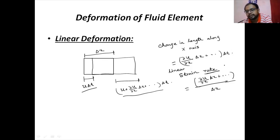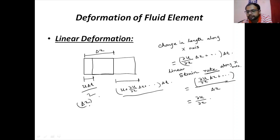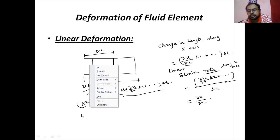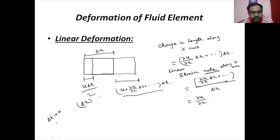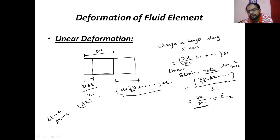So linear strain rate along x-axis is equal to du/dx. Higher order terms involve delta x squared, delta x cubed, etc. As delta t tends to zero, delta x also tends to zero, so those terms vanish. The linear strain rate along x-axis is denoted E_xx. It is also a second order tensor.